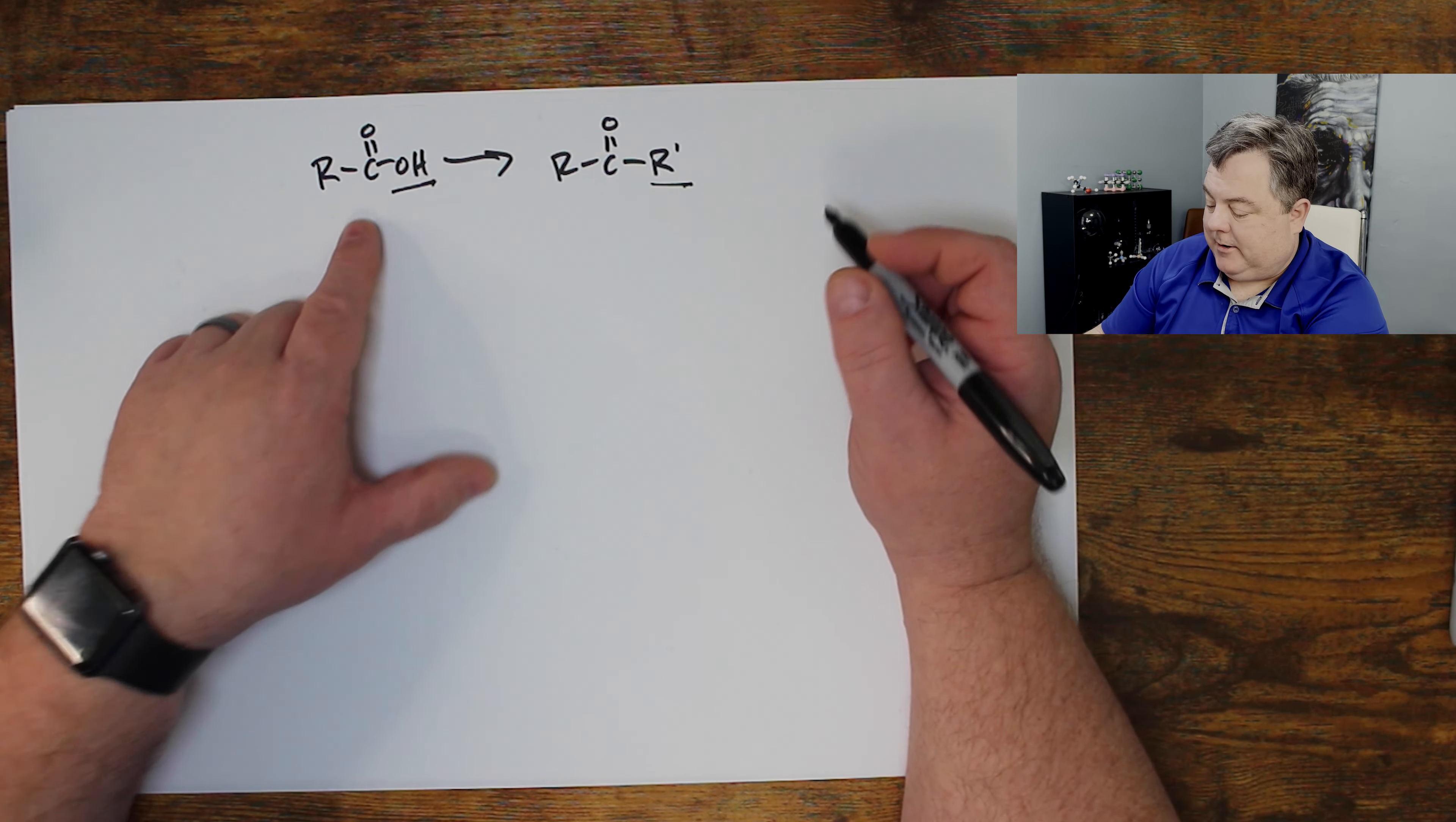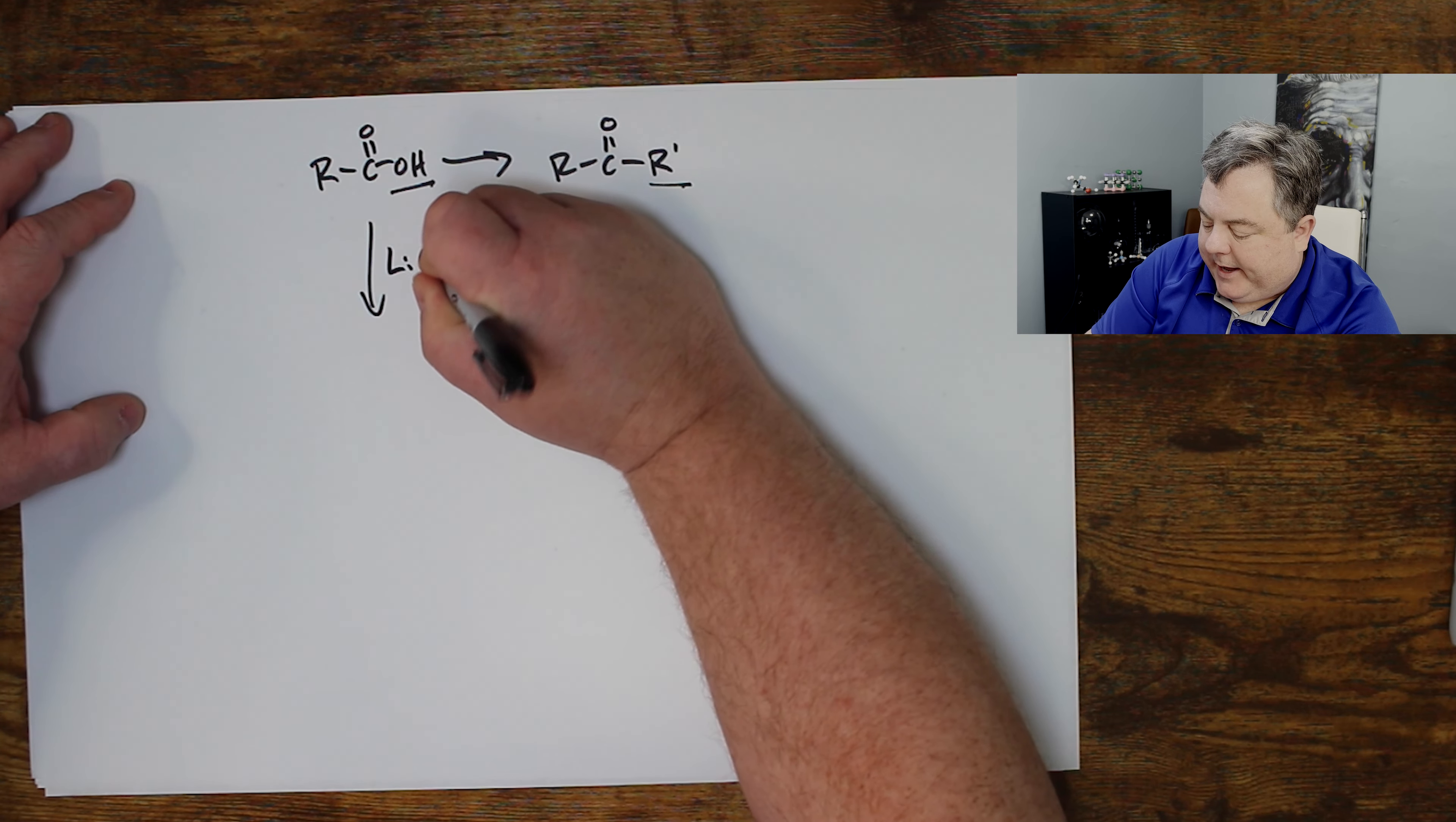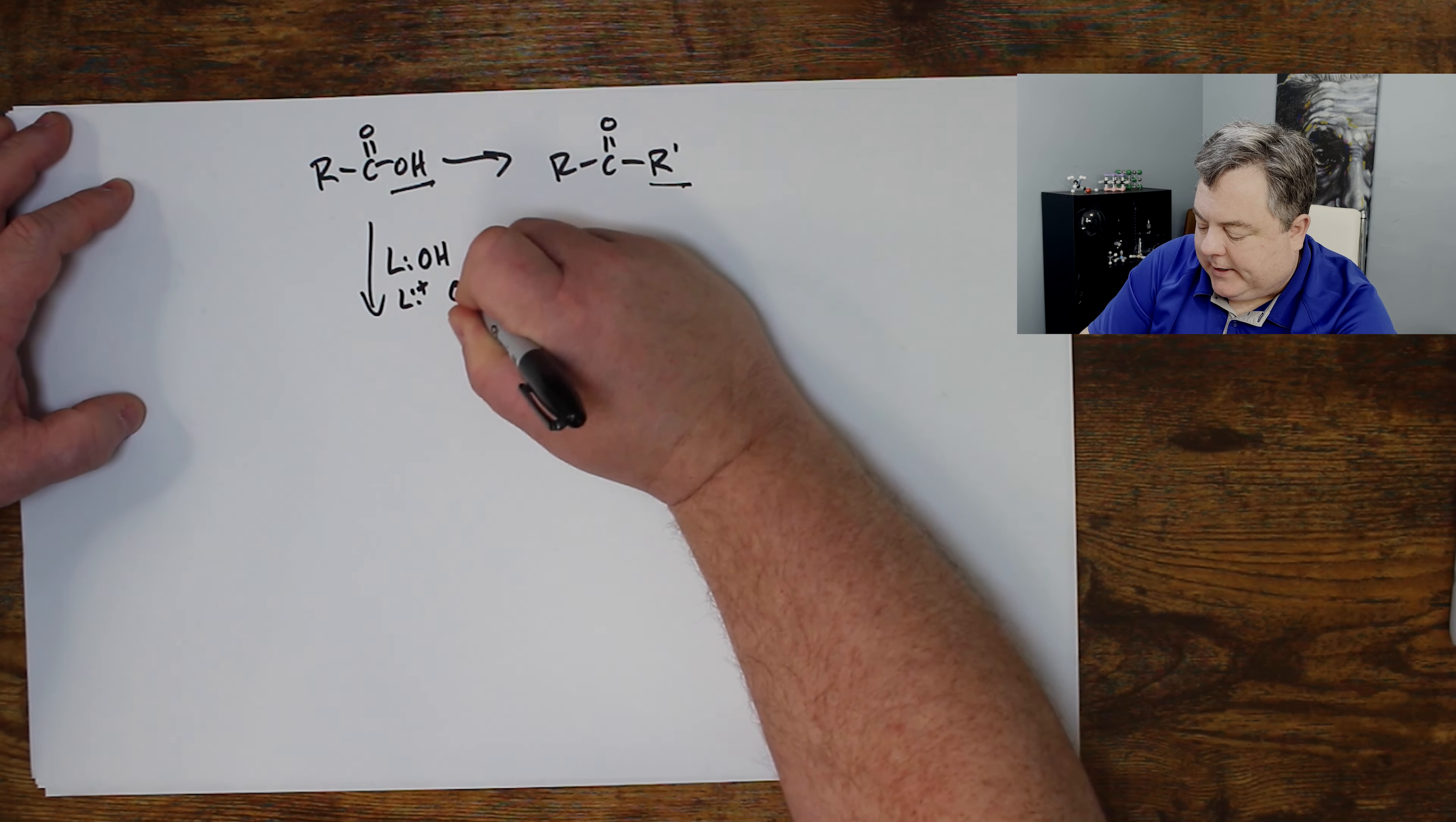I want you to notice I need to add an R prime to this carboxylic acid and I need to get rid of an OH somehow. So here's how we do it.